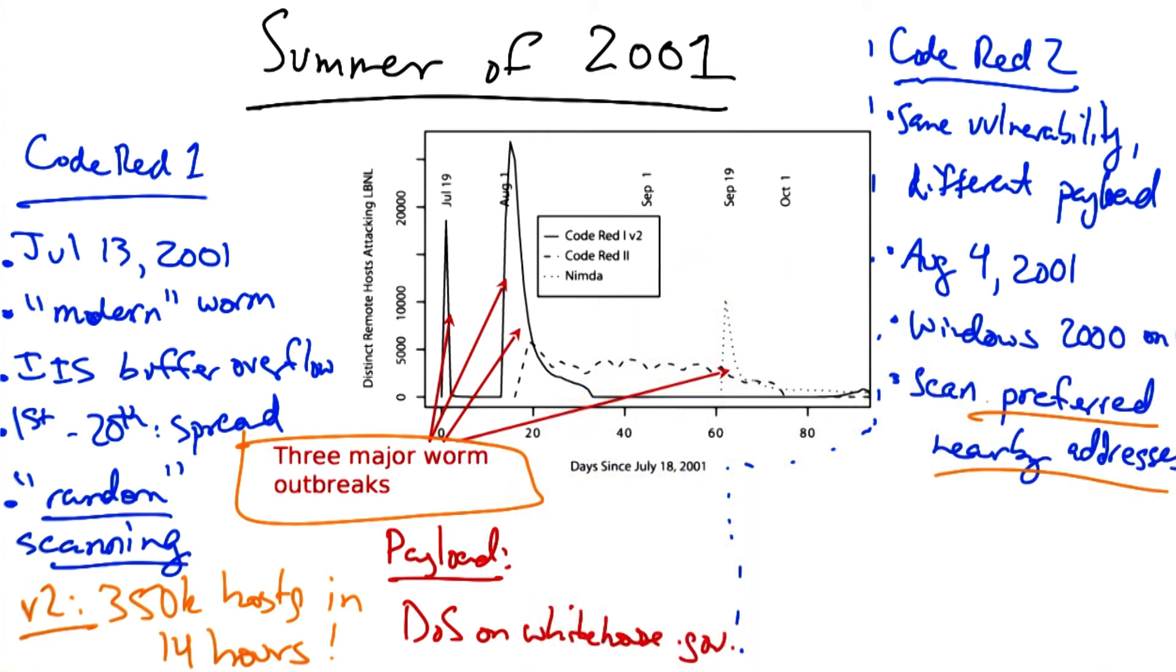The scan actually preferred nearby addresses. It would choose addresses from the same /8 with probability 1/2, from the same /16 with probability 3/8, and randomly from the entire internet with the remaining 1/8 probability. The reason for preferring nearby IP addresses was that if there was one vulnerable host on the network, there was likely to be more,